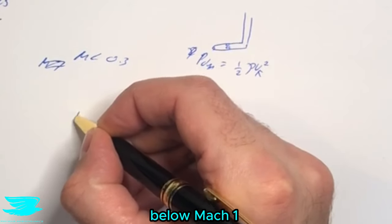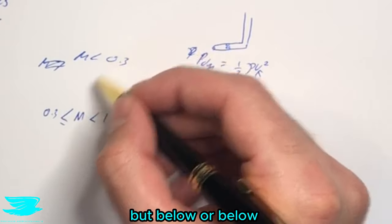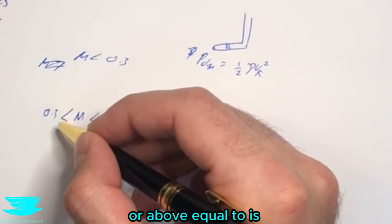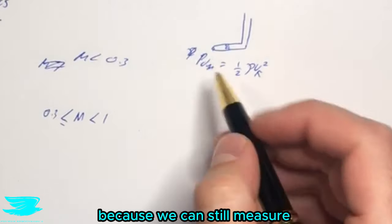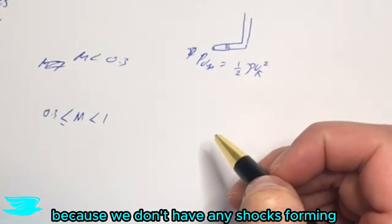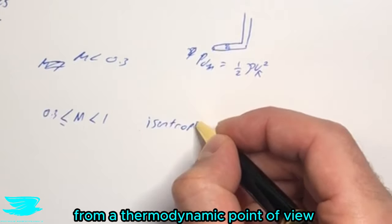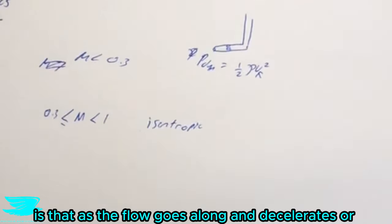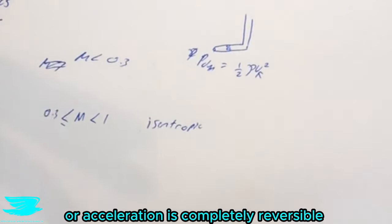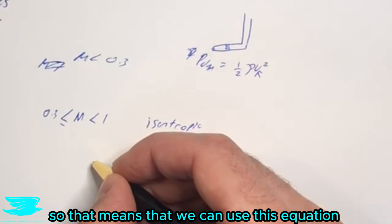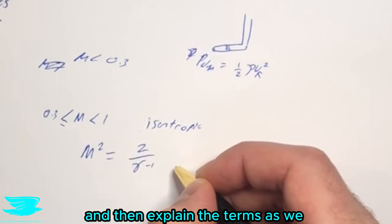When we go to subsonic compressible flow, this means we are still below Mach 1 but now at or above Mach 0.3. We can still use the pitot-static tube in this situation because we can still measure the total pressure and the static pressure. The great thing is that because we don't have any shocks forming, the flow is isentropic. From a thermodynamic point of view, as the flow decelerates or accelerates there is no heat transfer, meaning the process is completely reversible. So we can use this equation to find velocity from the Mach number.